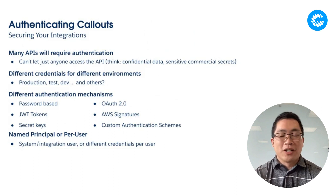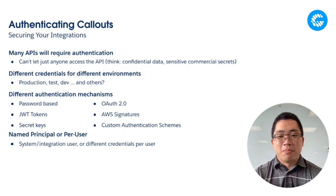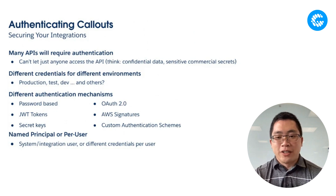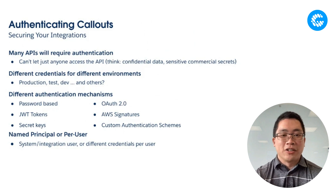Depending on the system you're connecting to, these may have different authentication mechanisms — some straightforward like passwords or secret keys, to more complex ones like OAuth, JWT tokens, or even some custom authentication schemes. Your integrations might also run as a system user, where the org uses the same credentials to connect to an external system on behalf of the user, or each individual Salesforce user may need different credentials to access external systems. As you can see, this can make callouts much more complicated than that three-line example.